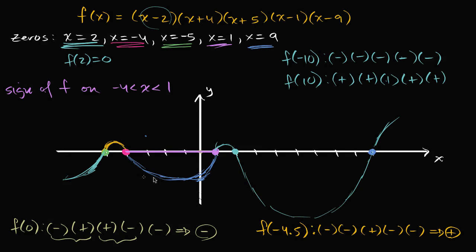If someone gave you a different interval that includes a zero, say the interval from one to nine, well that's going to include a zero in it, so the function is going to be sometimes positive and sometimes negative on this interval. The key is: between two roots, not including the roots, the function is always going to be positive or always negative over that interval. Whatever the sign is at any point in the interval is going to be the sign throughout that interval, not including the endpoints.